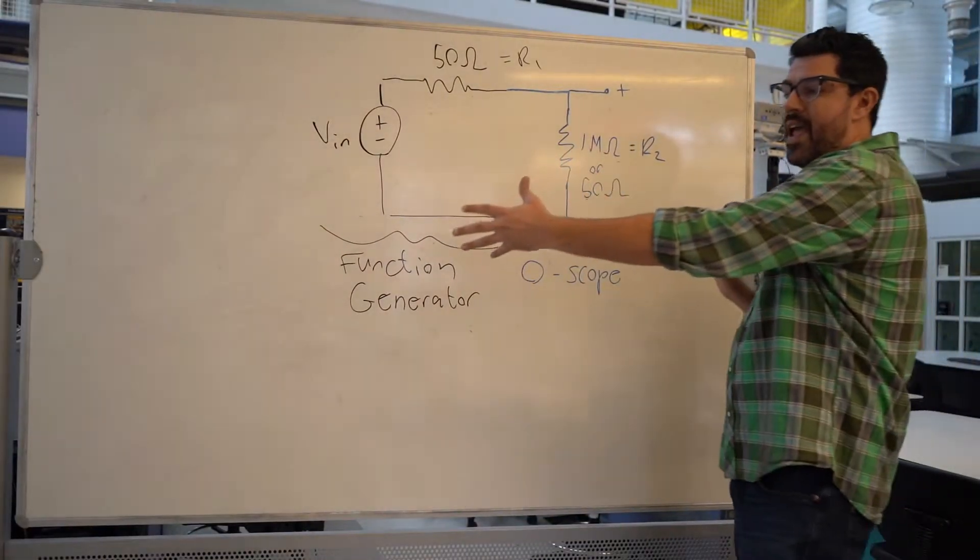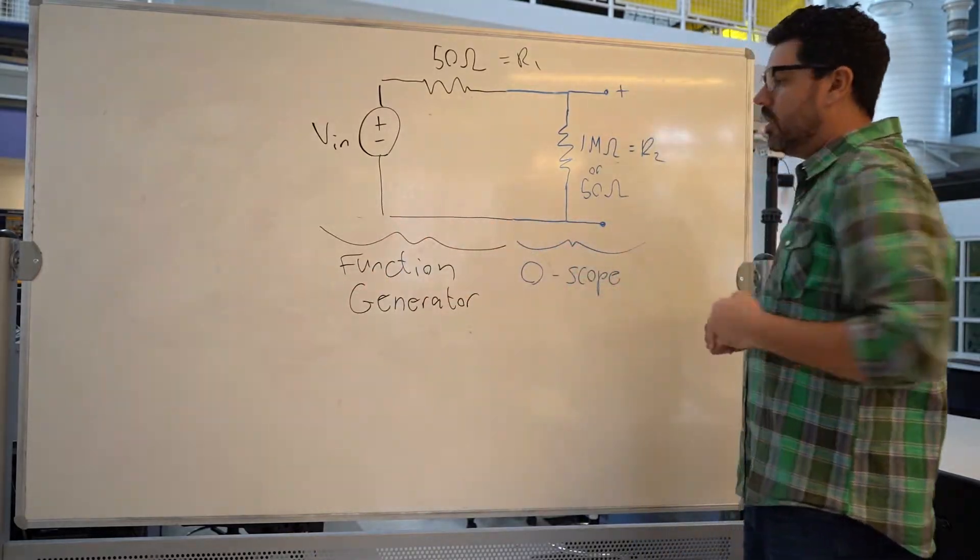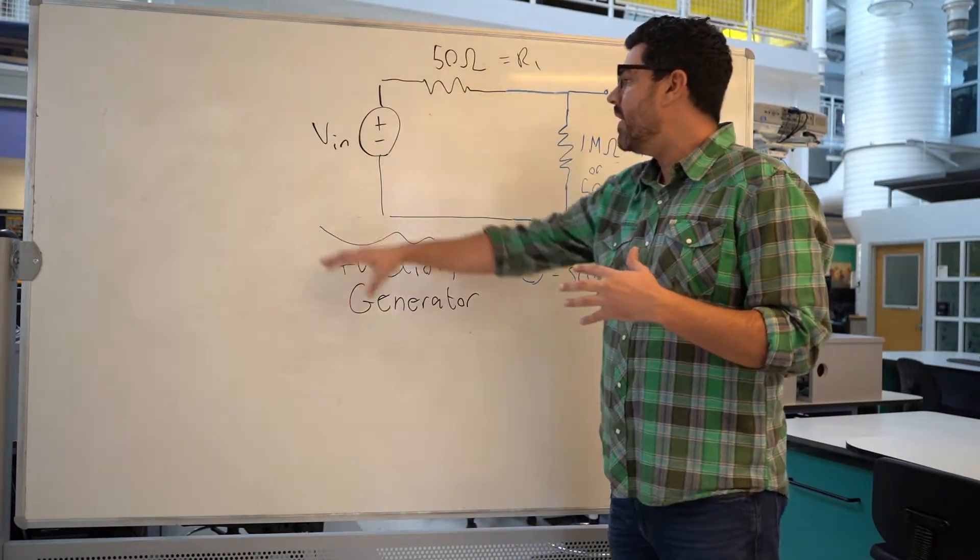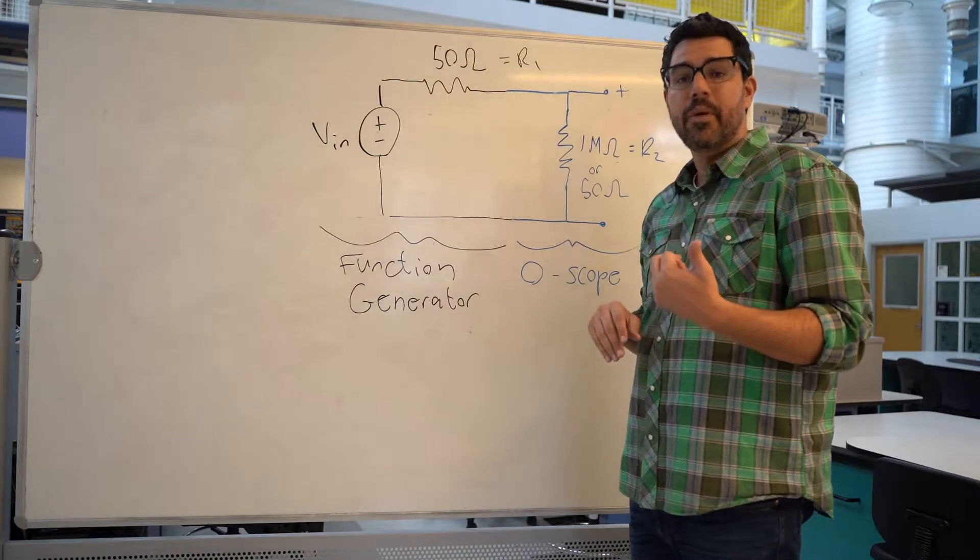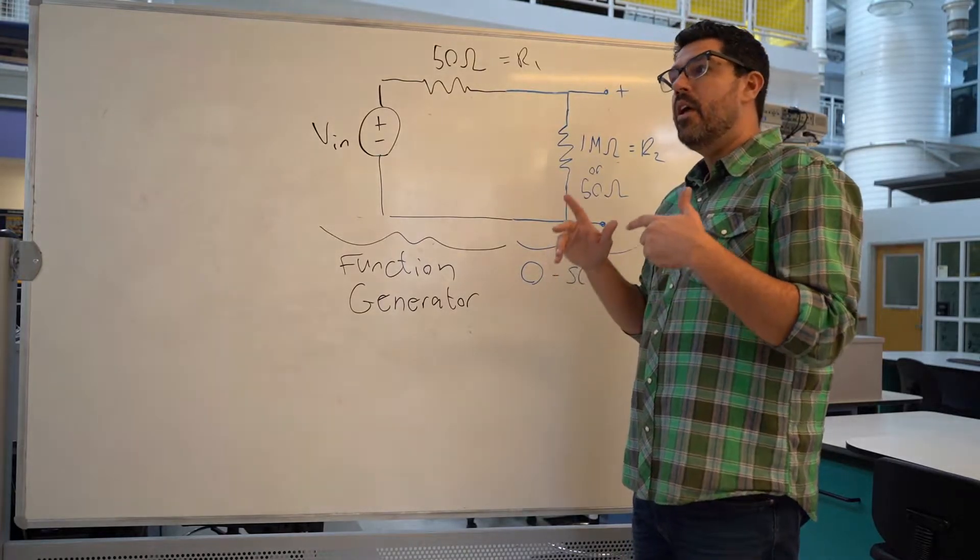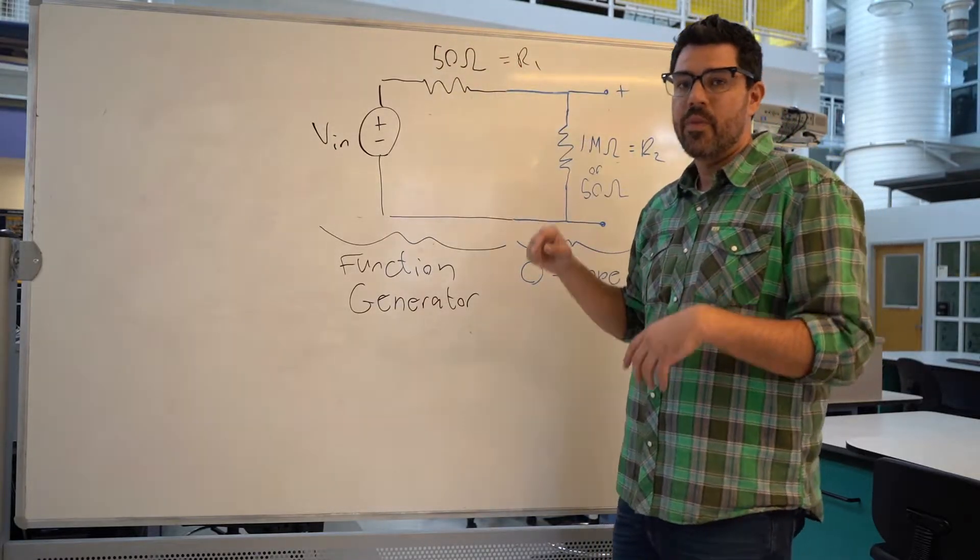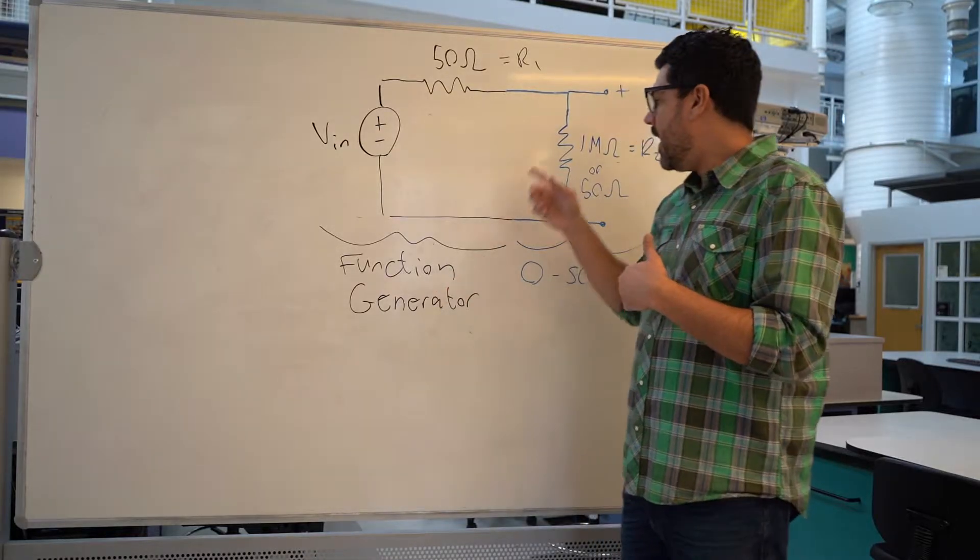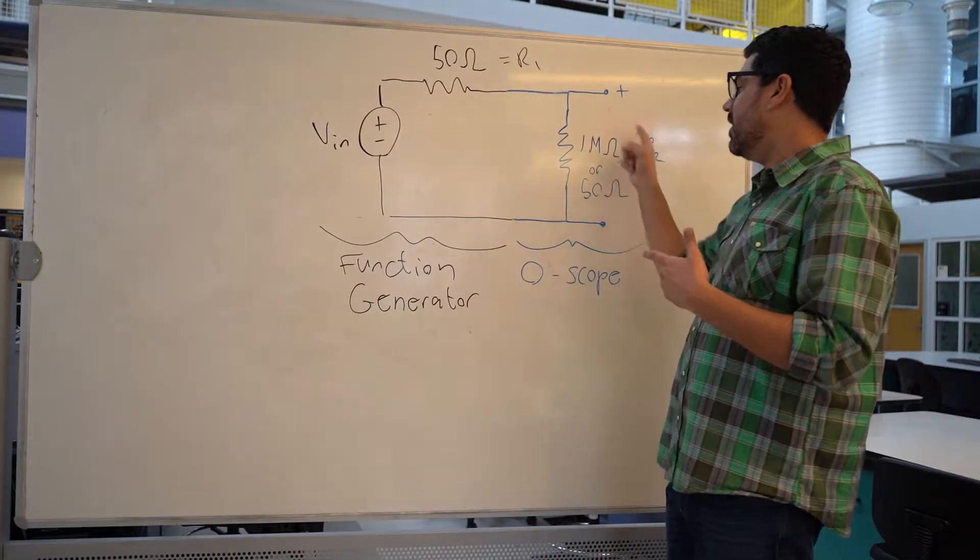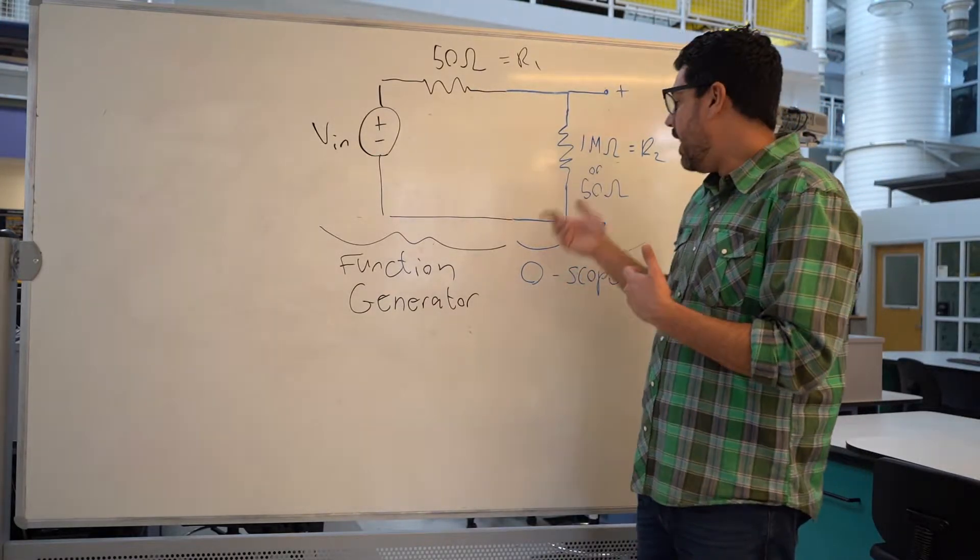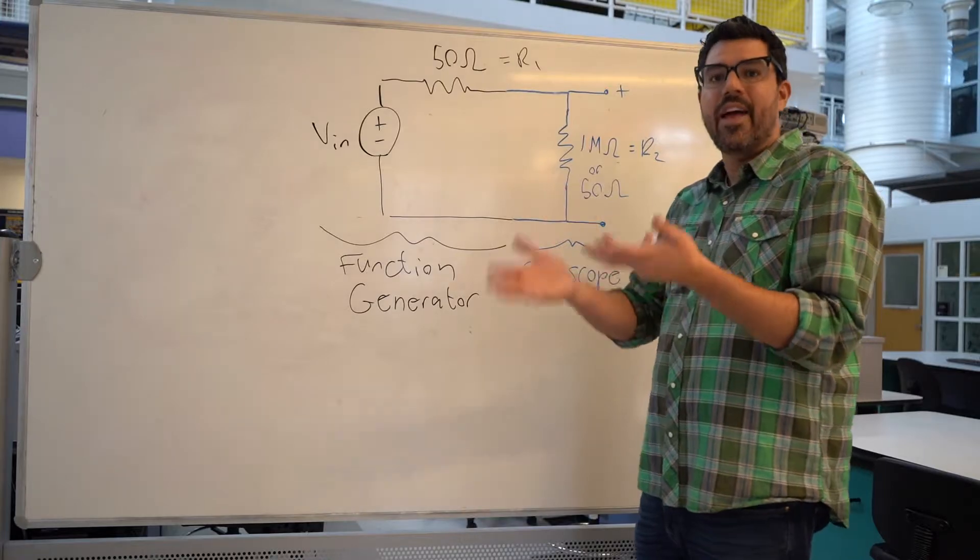Here's a pictorial or a schematic view of the function generator connected to the oscilloscope. The function generator always looks like this. This is an equivalent circuit. It's got a 50 ohm equivalent impedance. When you change that setting, that doesn't mean you've changed this value. This value doesn't change. What you're telling the function generator really is what your oscilloscope is set to. When you say high Z, you're saying the oscilloscope is set to 1 mega ohm. If you're saying 50 ohms, you're saying the oscilloscope is set at 50 ohms. Let's talk about how that changes things.